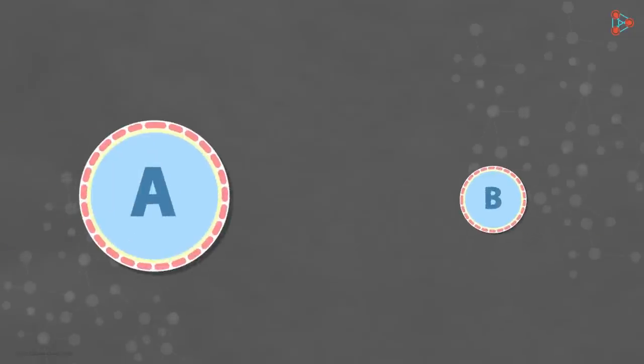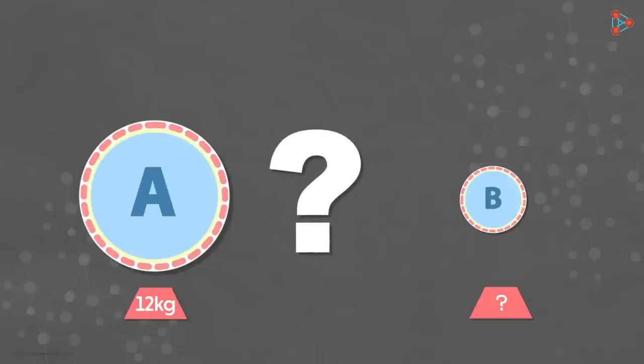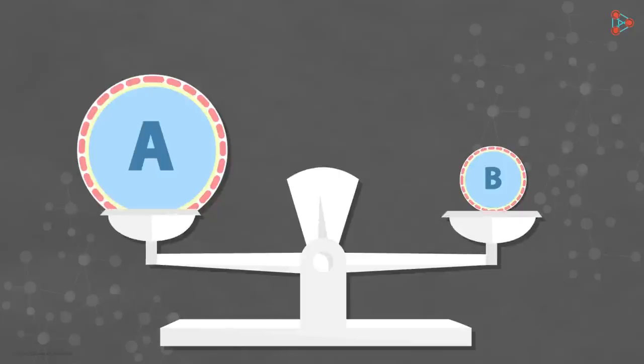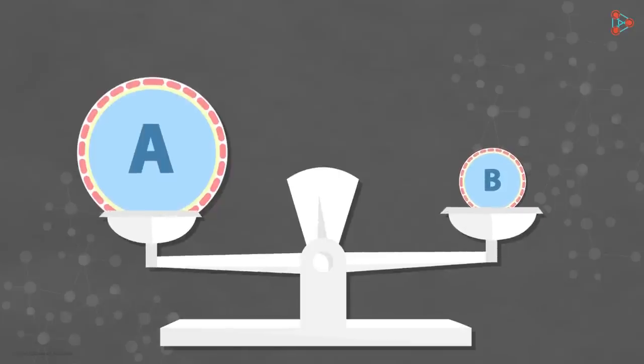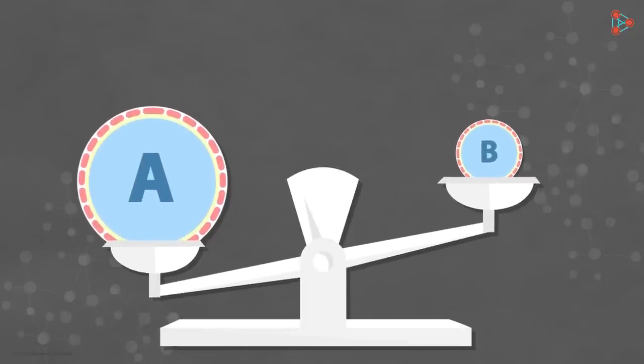Imagine we have two objects A and B. Object A weighs around 12 kilograms is what we know. But we do not know the weight of object B and that's what we need to find. How do we find that out? We just have a weighing balance with us. Let's put them on either side of the balance and see what happens. Clearly, object A is heavier.